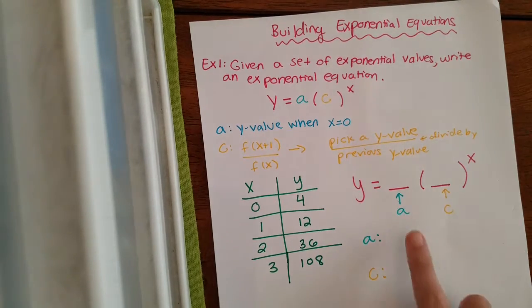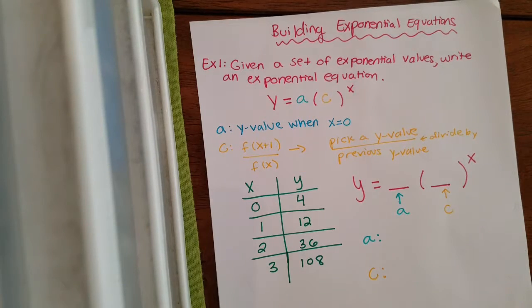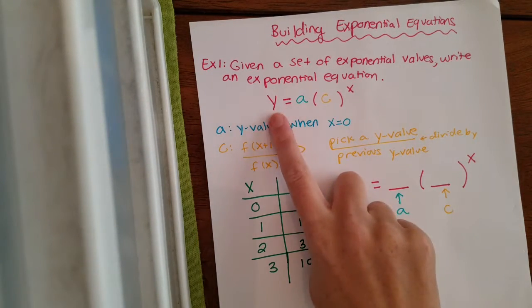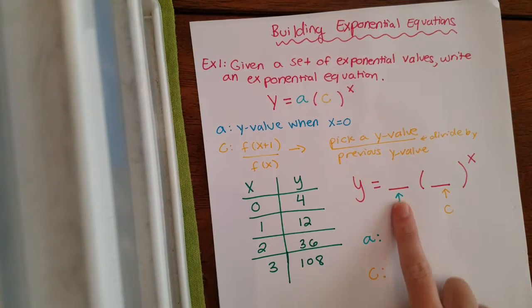So to find the a value, when you guys are building the exponential equations, the only thing you need to fill in are the a and the c values. You leave the y and the x alone. Don't touch those two. All you have to fill in is your a value and your c value.